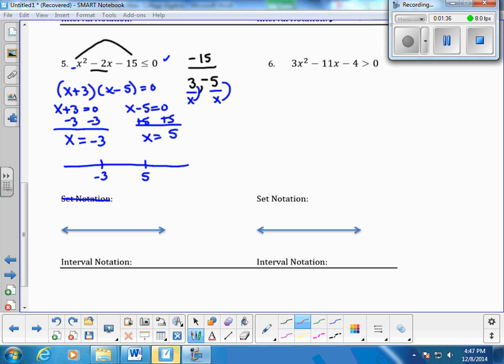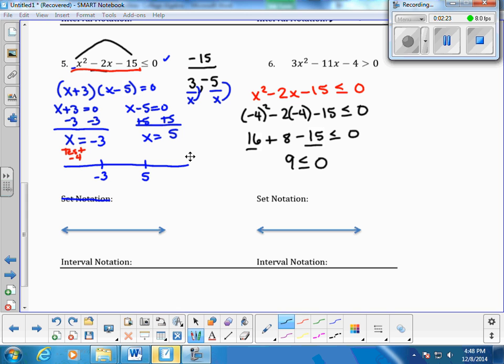So, what I'm going to do is I'm going to test some number over here. Well, if this is negative 3, I can pick any number that I want to be on this side. So I'm just going to pick one to the left of that, which is negative 4. And I'm going to plug negative 4 into this original equation, which is x squared minus 2x minus 15, less than or equal to 0. Negative 4 squared is 16. Negative 2 times negative 4 is positive 8. So, 16 minus 15 is 1 plus 8. 9 is not less than or equal to 0, so that is going to be false.